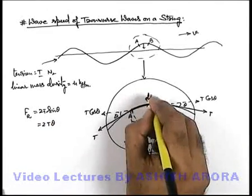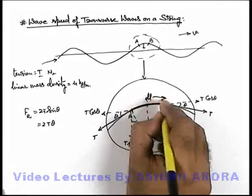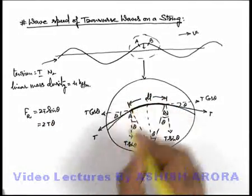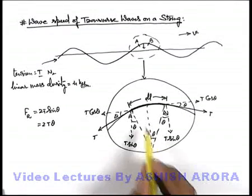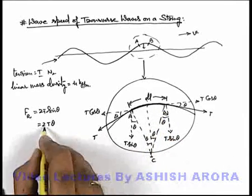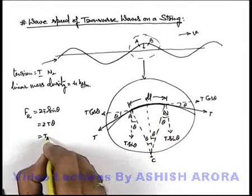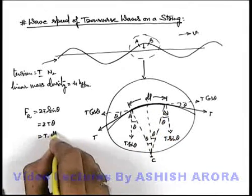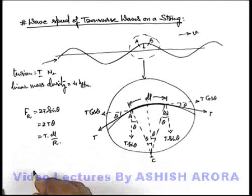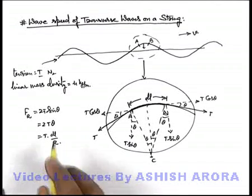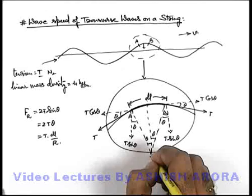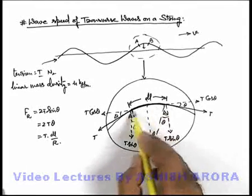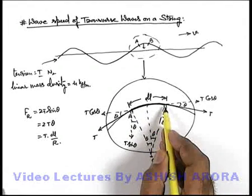And if this section A-B is very small, angle θ will also be small, so it can be written as 2Tθ. If the length of this segment is dL, then θ can be written simply as dL upon R. So this 2Tθ can be written as T times dL by R. In this situation, this is the net force acting toward the centre of curvature of part A-B of the string.